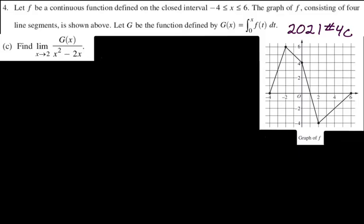This 2021 problem looks really similar, which is why I think it's becoming a standard type. Let F be a continuous function defined on [−4, 6], whose graph consists of four line segments. Let G be defined by G(x) = ∫₀ˣ F(t) dt — an accumulation function. We need to find the limit as x approaches 2 of G(x)/(x² − 2x). Since x² − 2x is a function we know, we can evaluate that limit by direct substitution. By the Second Fundamental Theorem, G'(x) = F(x).